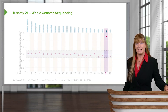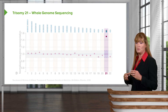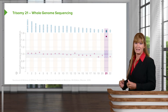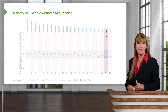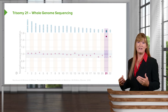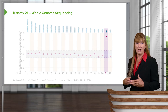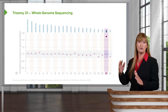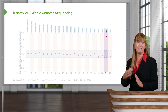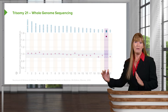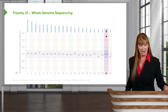Those are three techniques that we could use to diagnose not just trisomy 21, but any of these chromosomal disorders in which we're seeing larger chunks of chromosome — either full polyploidies or partial polyploidies.